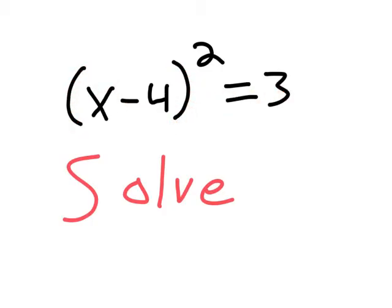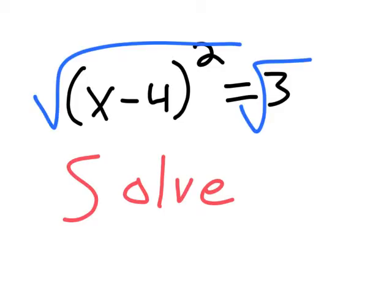First thing to notice is all this is being squared. So we can undo squaring something by taking, in blue, the square root of everything.